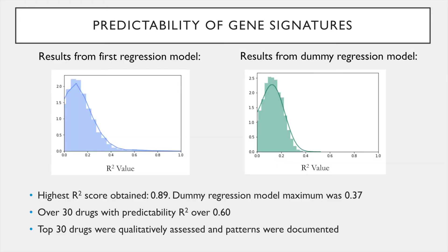And here are the results. The plot on the left has the predictability scores for the regression model that were between 0 and 1, with the highest r squared being 0.89. We compare this result to a dummy regression model, which can be seen on the right, with a maximum r squared of 0.37. When looking more closely at the data, we found that there were over 30 small molecules that had an r squared over 0.6, suggesting that there were some structural motifs in the dataset that contribute to the predictability of gene signatures.